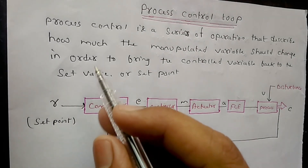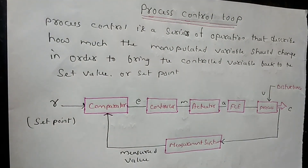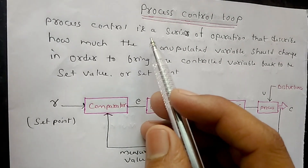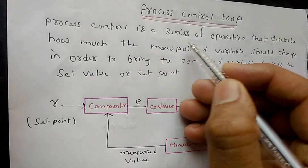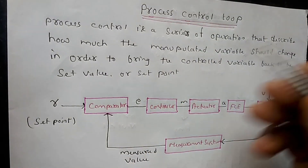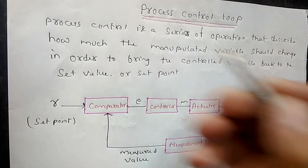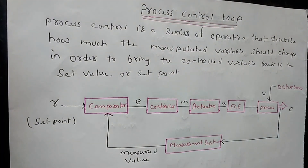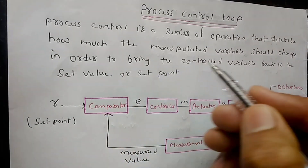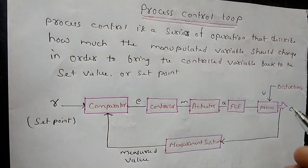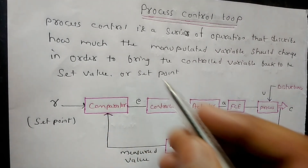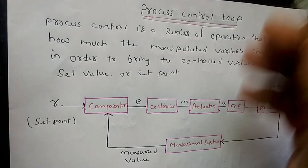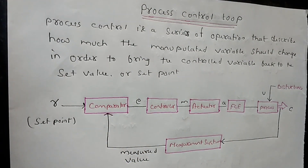So this is the definition of process control. Process control is a series of operations that describe how much manipulated variables should change in order to bring the control variable back to the set point or set value.